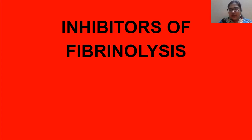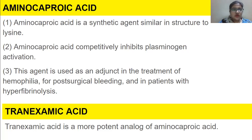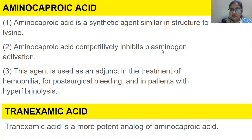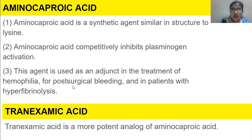Next we have inhibitors of fibrinolysis. We may want to lyse fibrin in order to get rid of a clot. First we have aminocaproic acid, which is a synthetic agent similar in structure to lysine. It competitively inhibits plasminogen activation. Plasminogen is converted into plasmin in the clotting process. This agent is used as an adjunct in the treatment of hemophilia, for post-surgical bleeding, and in patients with hyperfibrinolysis.